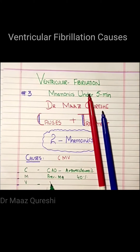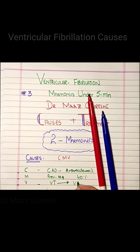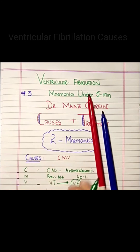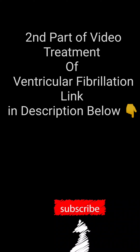Next is V, which is basically ventricular tachycardia, and it transforms itself into ventricular fibrillation. If you liked this video, check out the second part which covers the treatment of V-fib — link in the description below.